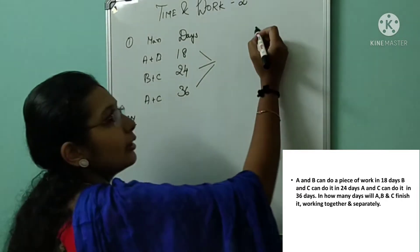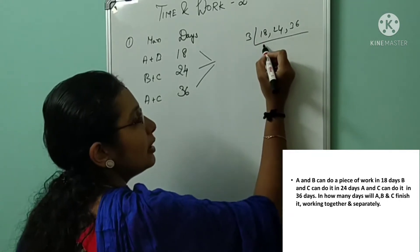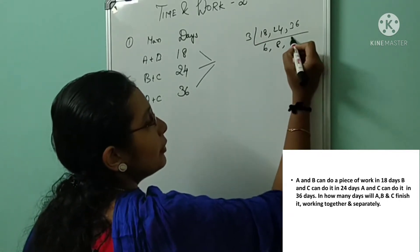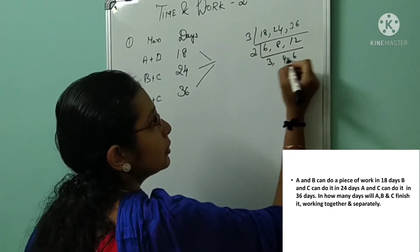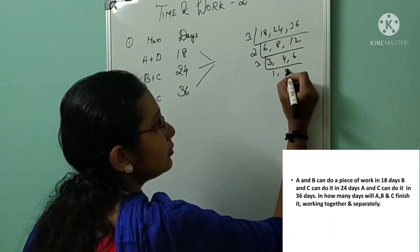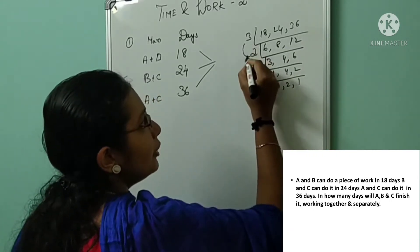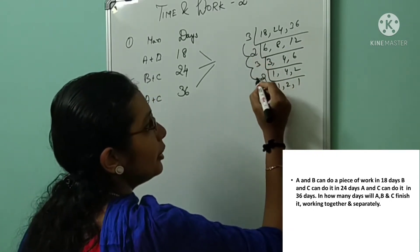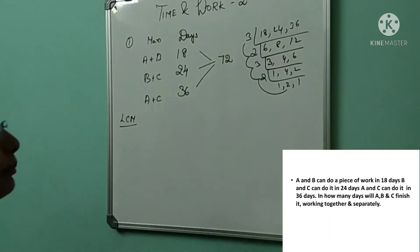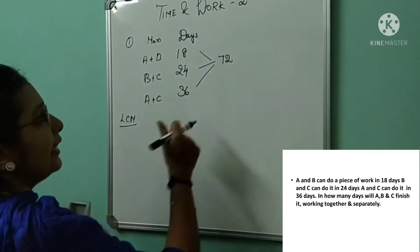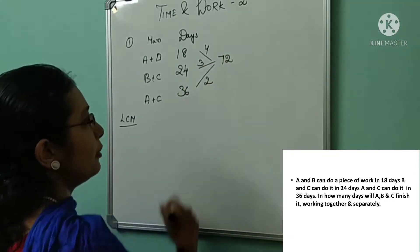First find the LCM for 18, 24, and 36. If you don't know how to find LCM, you can use the L division method. 18, 24, 36 are all divisible by 3, and working through the steps we get LCM = 72. So: 18 × 4 = 72, 24 × 3 = 72, and 36 × 2 = 72. So the efficiencies are: A+B = 4, B+C = 3, and A+C = 2.